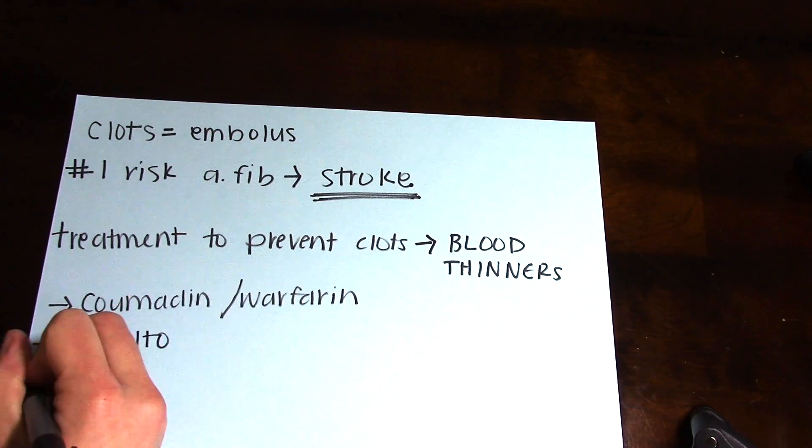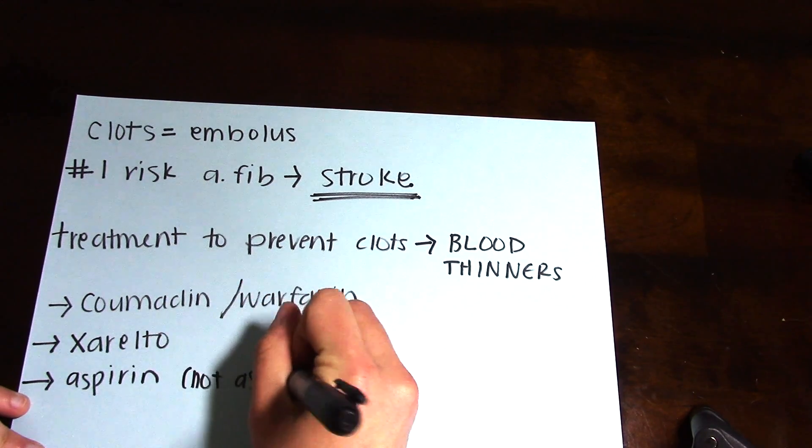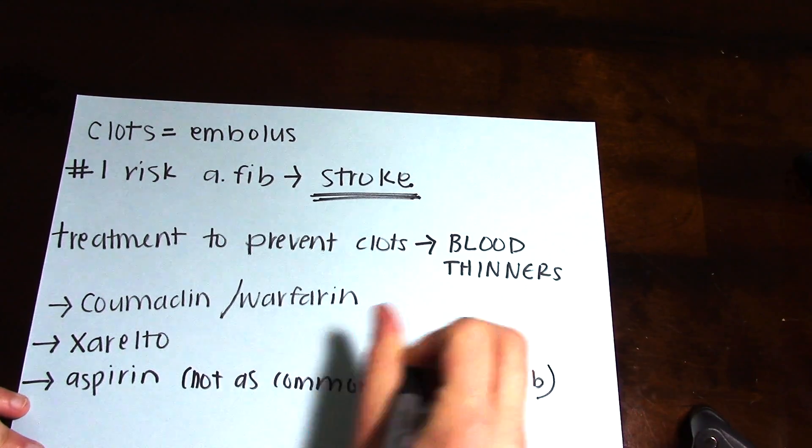Xarelto has become another popular blood thinner, and aspirin is also a blood thinner but it is not commonly used in AFib unless a patient has a high bleeding risk and needs something more mild to thin their blood.